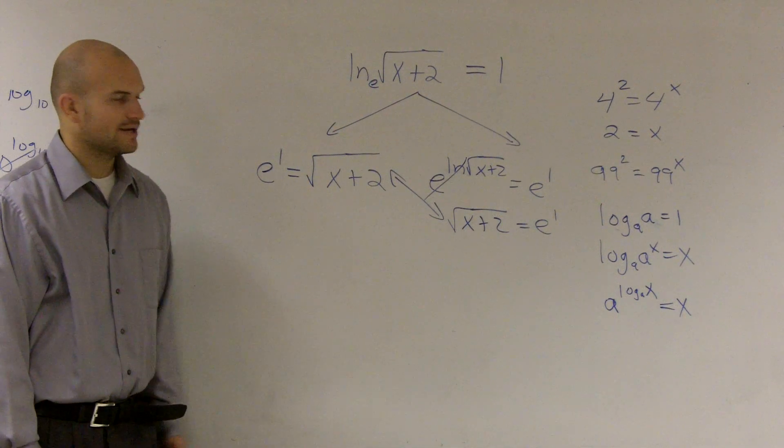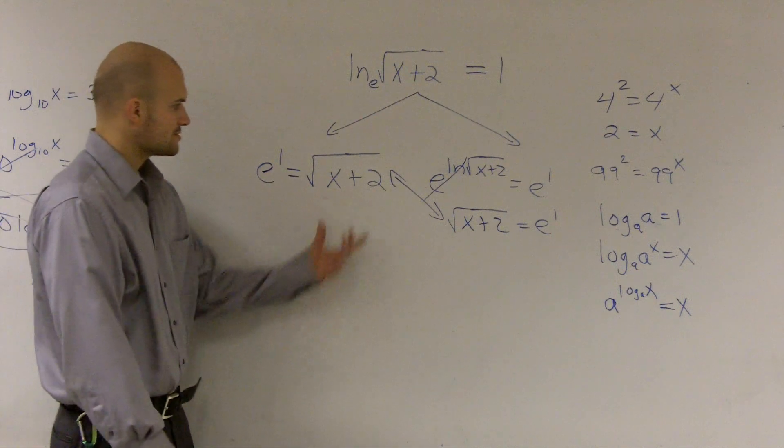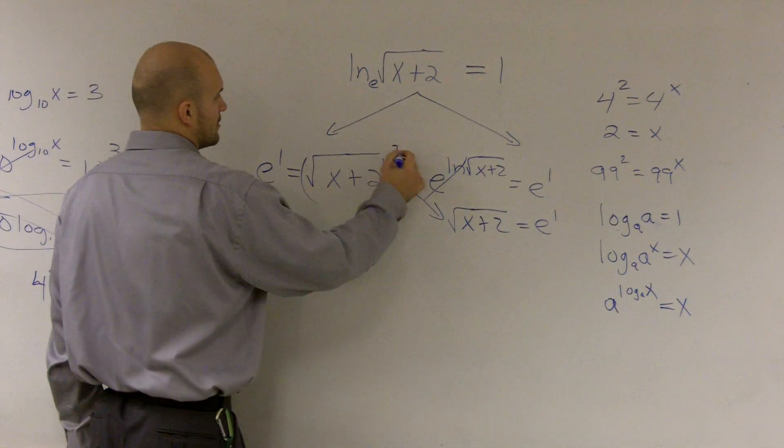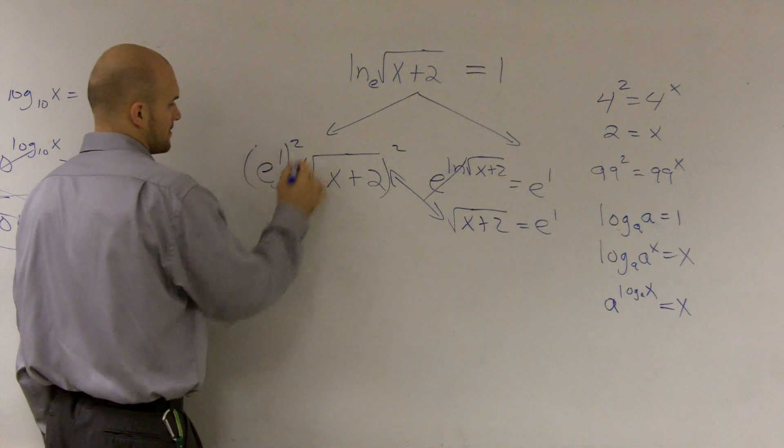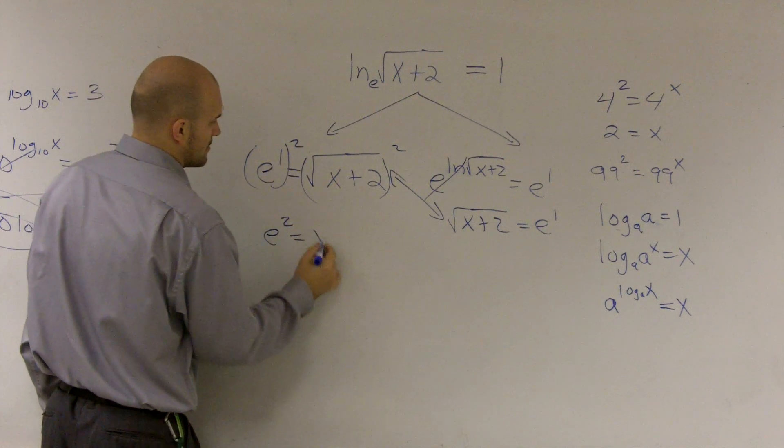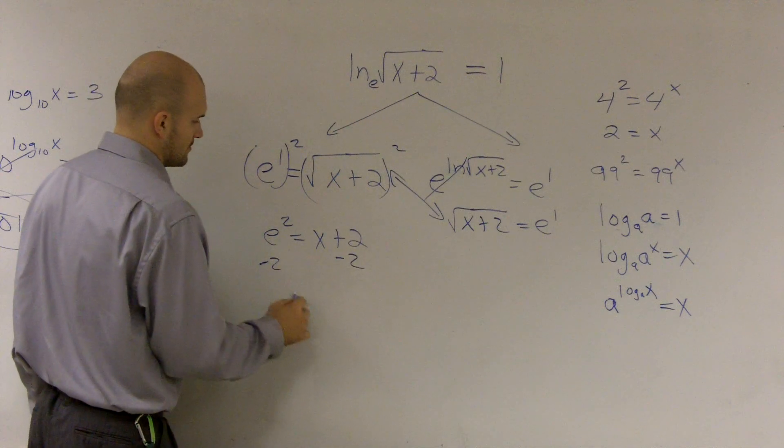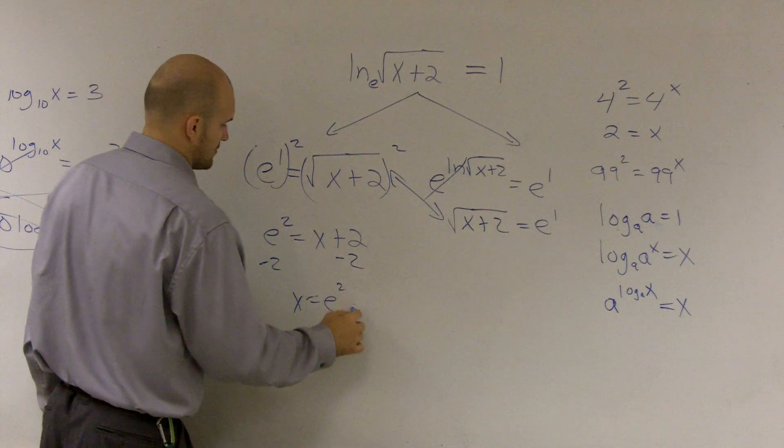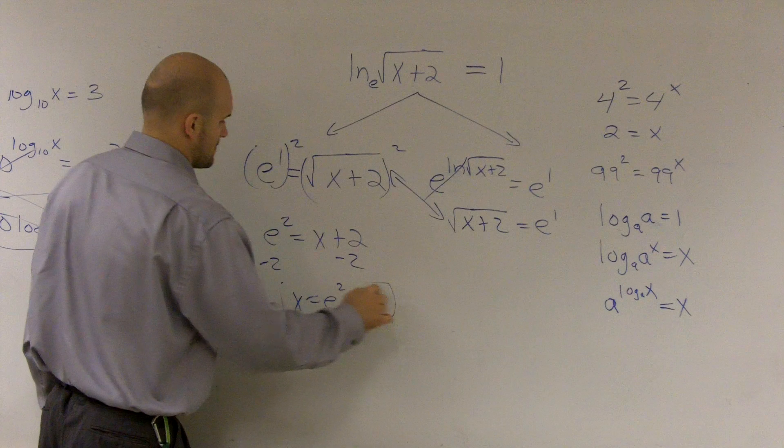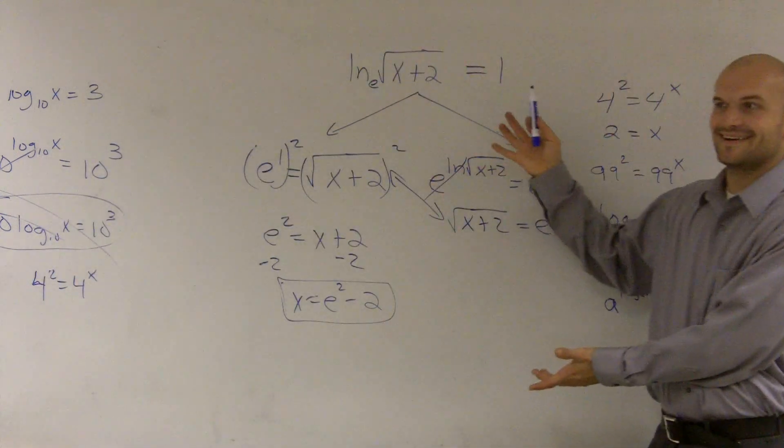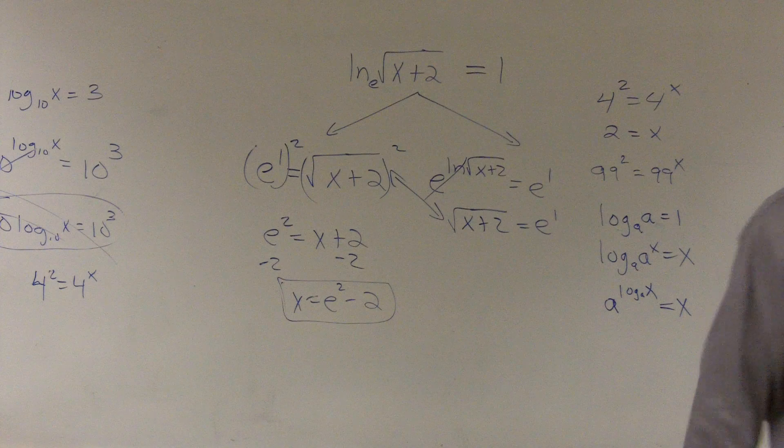Then, from here, we just need to solve. So how do you get rid of the square root? Square both sides. Right? Then subtract 2. Ta-da. That's it.